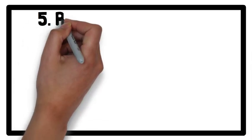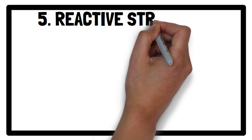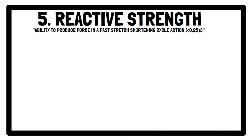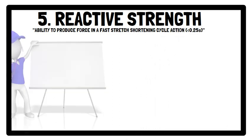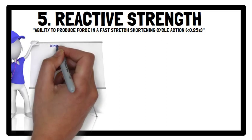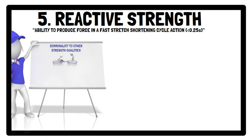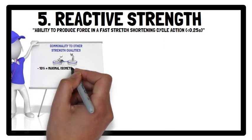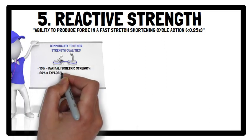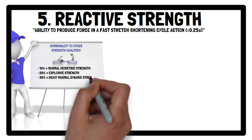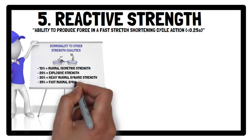Moving on to the fifth and final strength quality: reactive strength. This is the ability to produce force in a fast stretch-shortening cycle action, i.e. less than 0.25 seconds. Reactive strength seems to be uniquely independent of the other strength qualities, sharing a commonality of approximately 10% with maximal isometric strength, 20% with explosive strength, 30% with heavy maximal dynamic strength, and 35% with fast maximal dynamic strength.